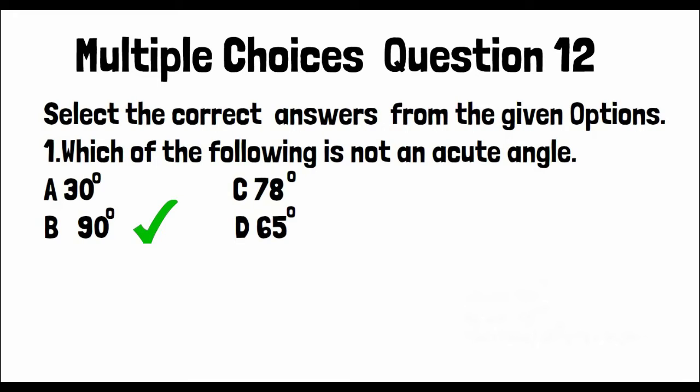Multiple choice question 12. Select the correct answer from the given options. Which of the following is not an acute angle? Option A: 30 degrees, Option B: 90 degrees, Option C: 78 degrees, and Option D: 65 degrees.